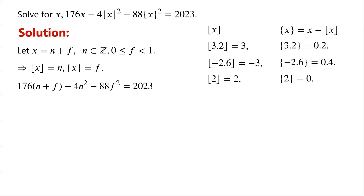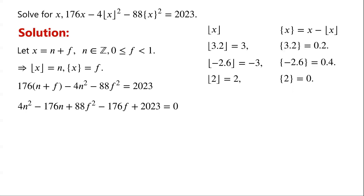Expanding and rearranging the equation, we have: 4n squared minus 176n, plus 88f squared minus 176f, plus 2023, equals 0.